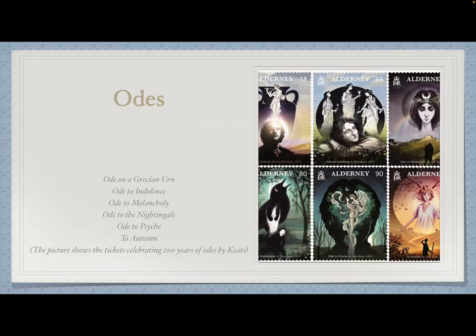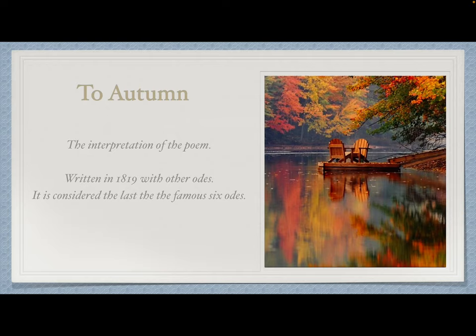To Autumn, although Keats does not use the word 'ode' in this poem, is still an ode. It is about the season of mists and fruits and beautiful yellow leaves. The poem was written in 1819 along with the other odes, and it is considered the last of the famous six odes. This is a very pictorial poem — the language and imagery are so nicely contrived that you can almost see, smell, and hear the sights and smells of Keats' native England and how autumn feels there.